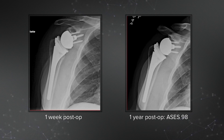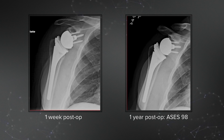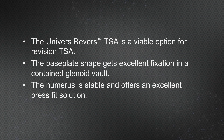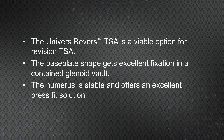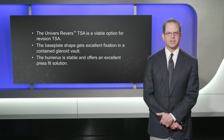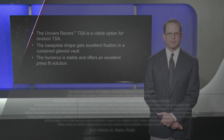The x-ray on the left is the initial post-operative image one week after surgery, and the x-ray on the right shows our image one year later with no evidence of radiolucent lines or sign of infection. The patient has a high ASES score and good functional outcome. In summary, the Arthrex reverse total shoulder arthroplasty was a viable option for revision total shoulder arthroplasty after infection in the presence of a contained glenoid vault defect. The humerus is stable and offers good press fit options desirable in a revision situation.